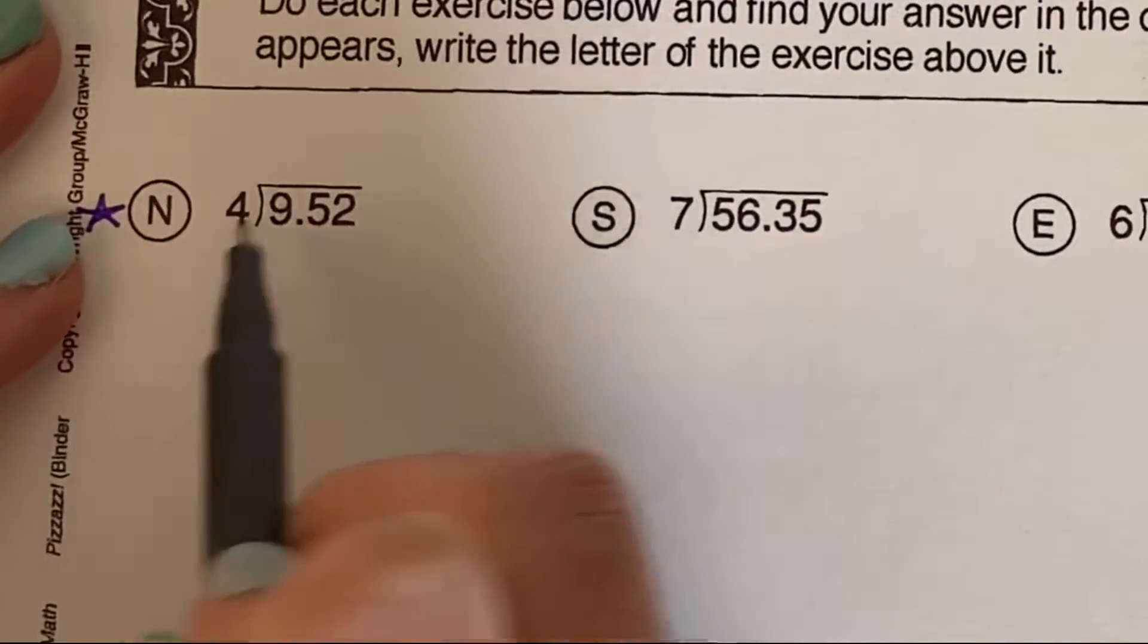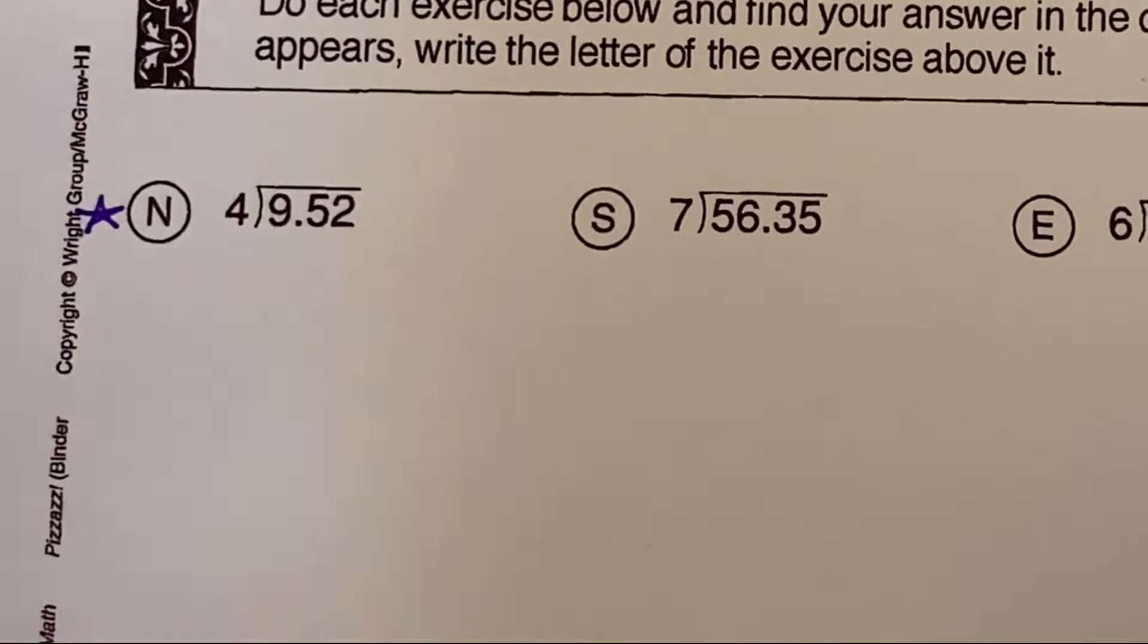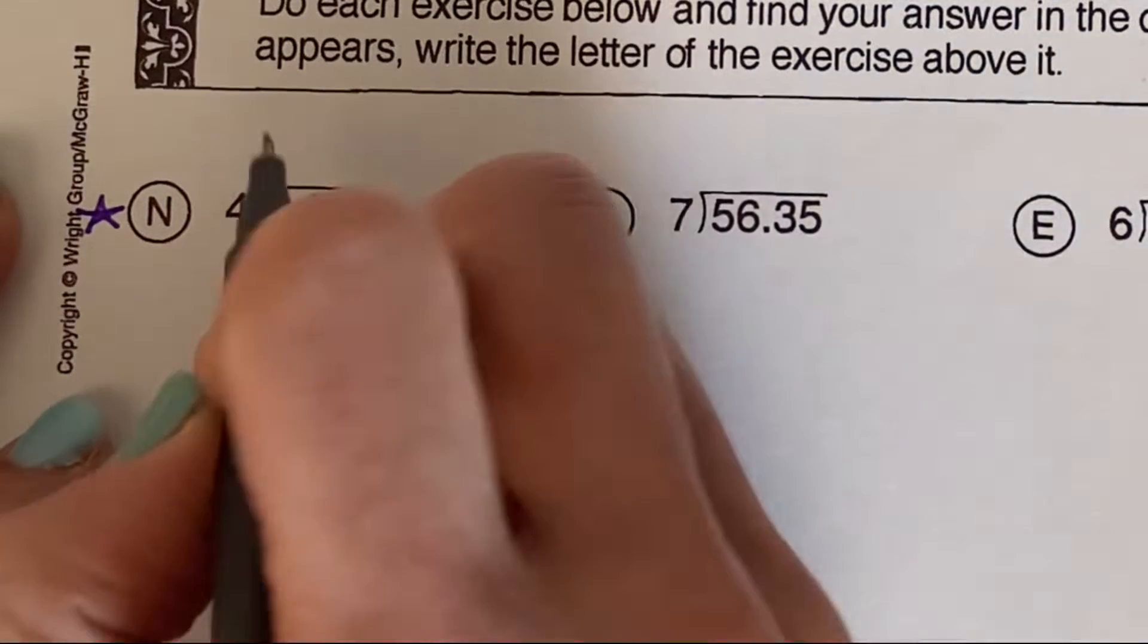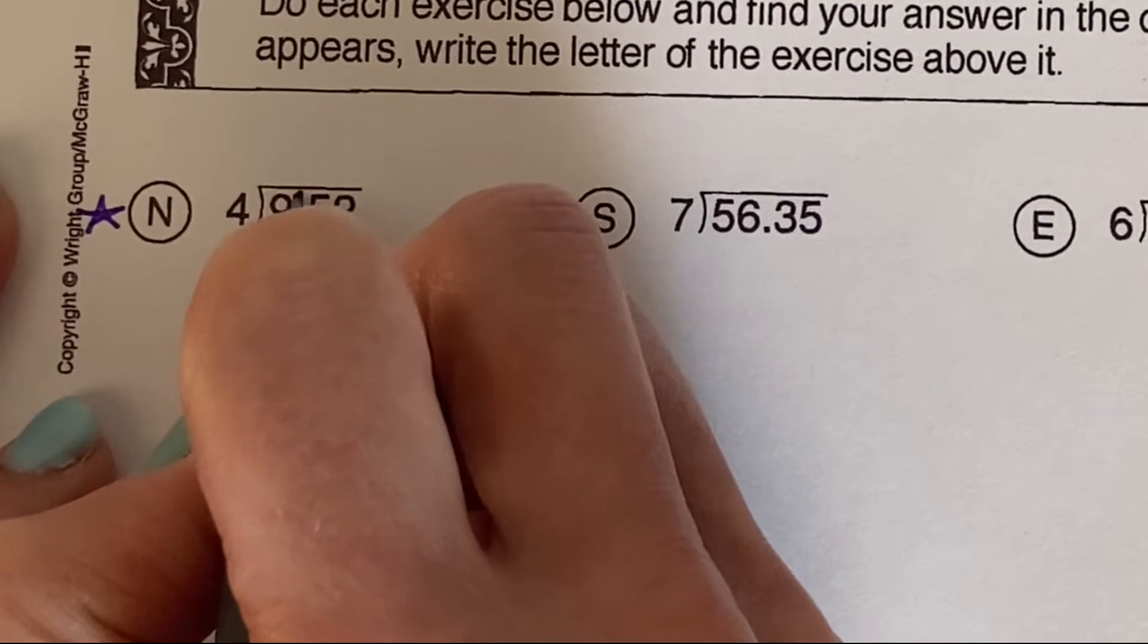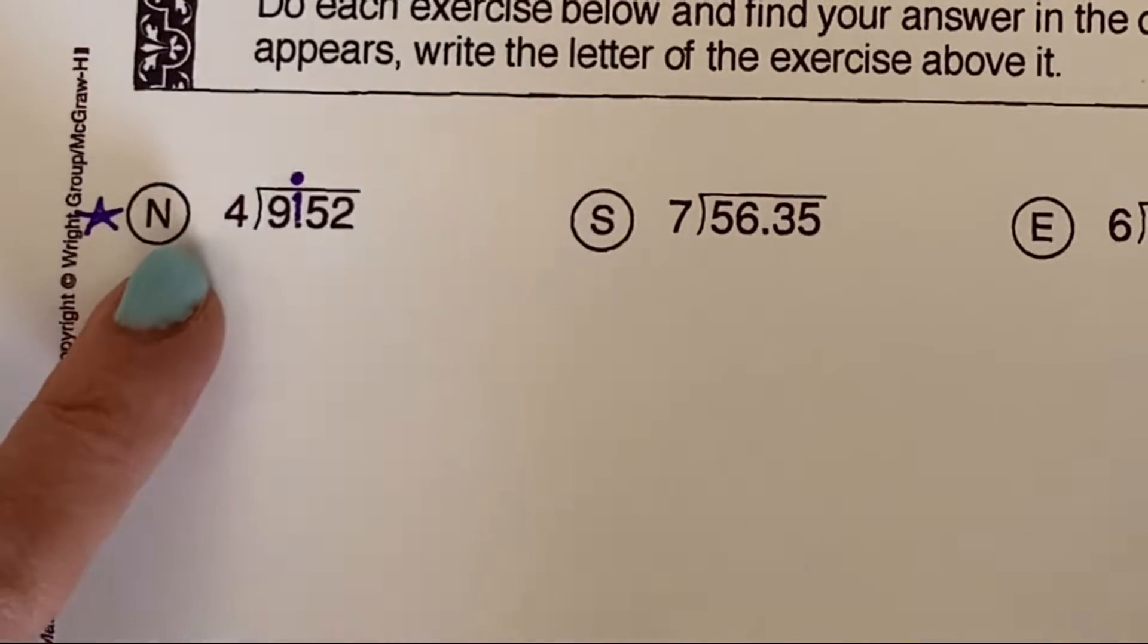We have 9.52 divided by 4. This one's already nicely written for us in long division form, so we don't have to do that step. But we are going to do step number 2, which is bring our decimal point straight up. We're going to be nice and neat. We're having to write kind of small, so we'll be careful.